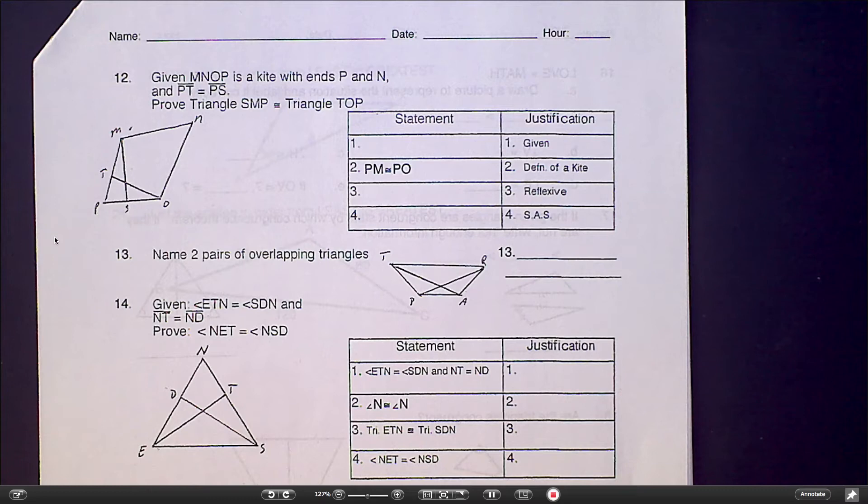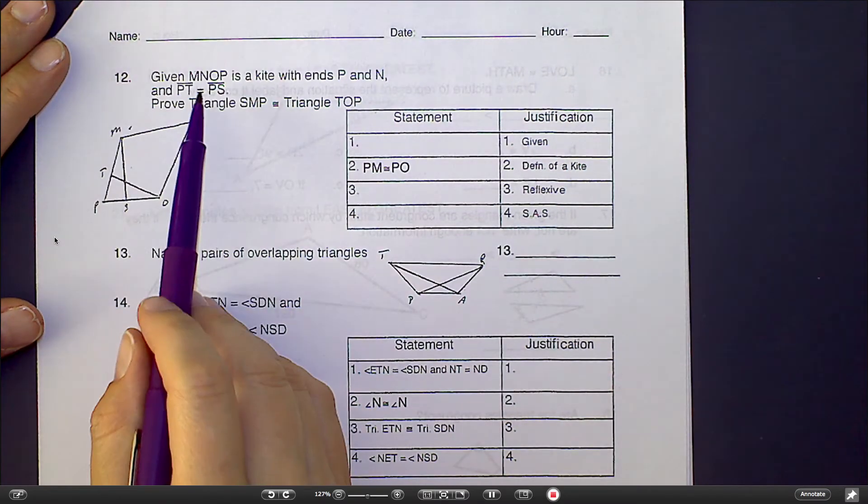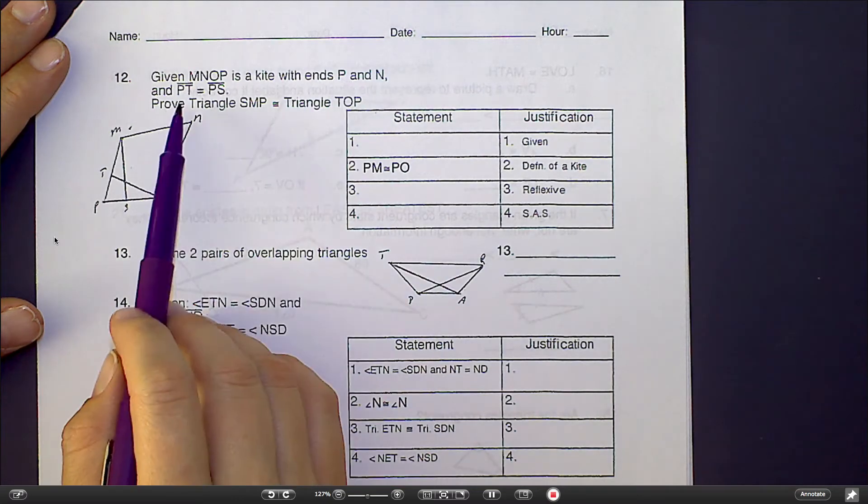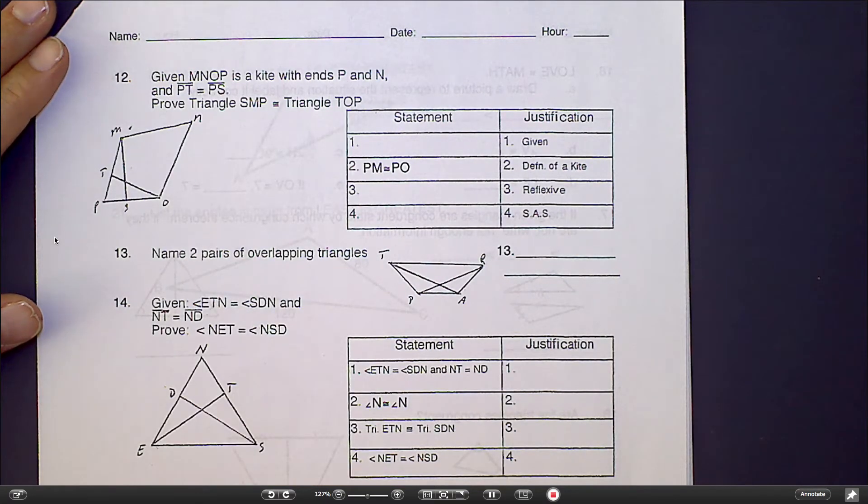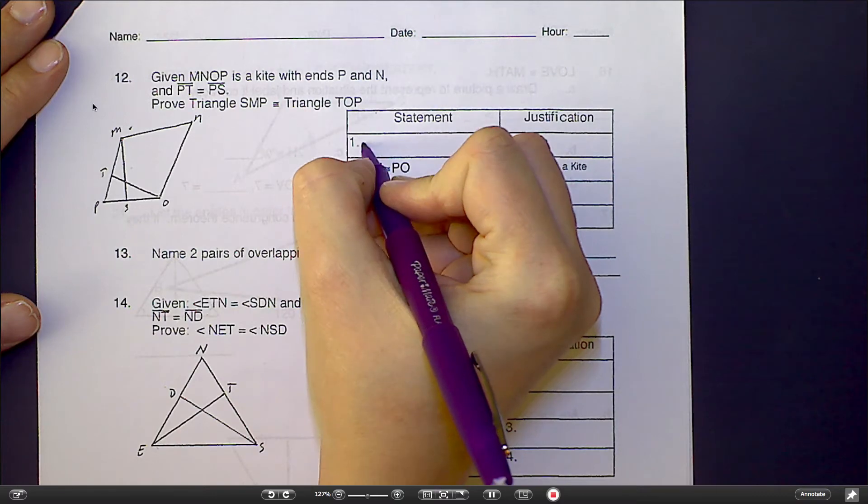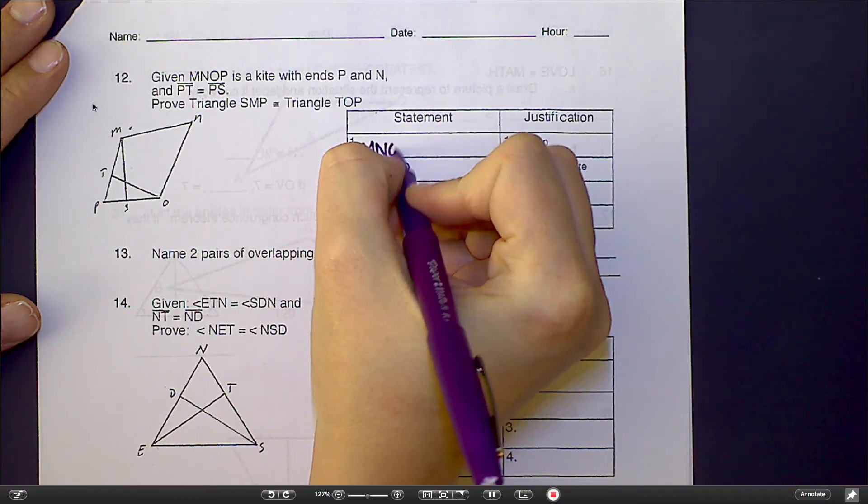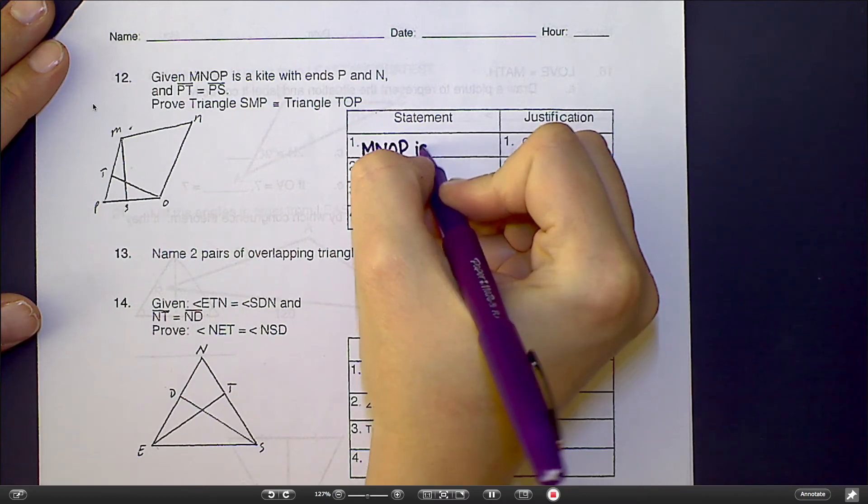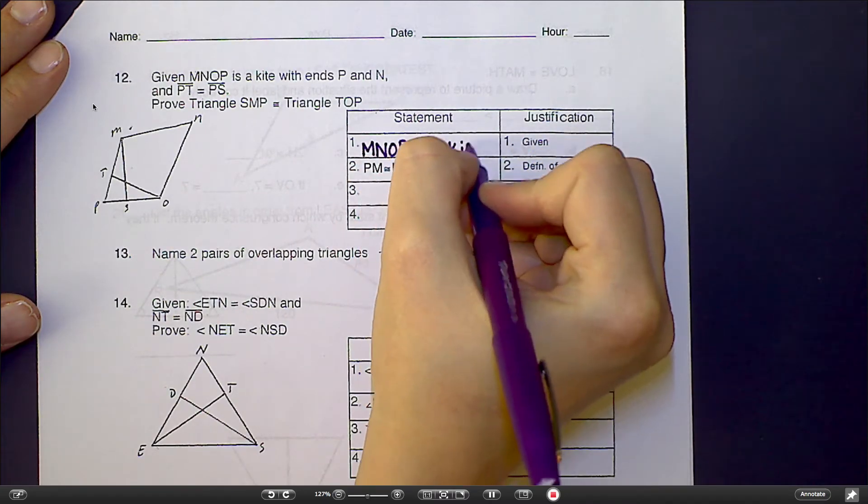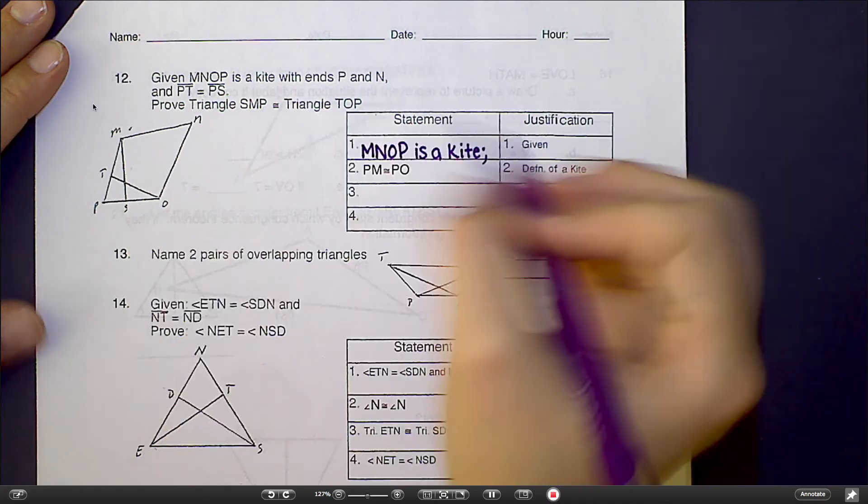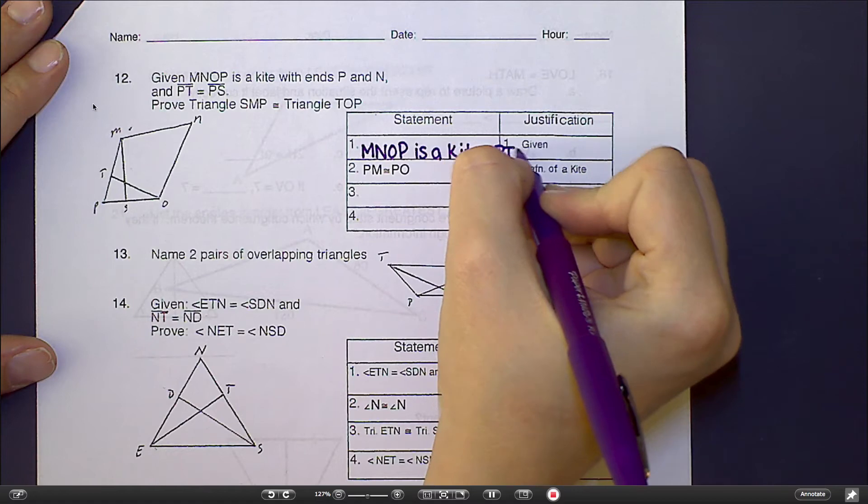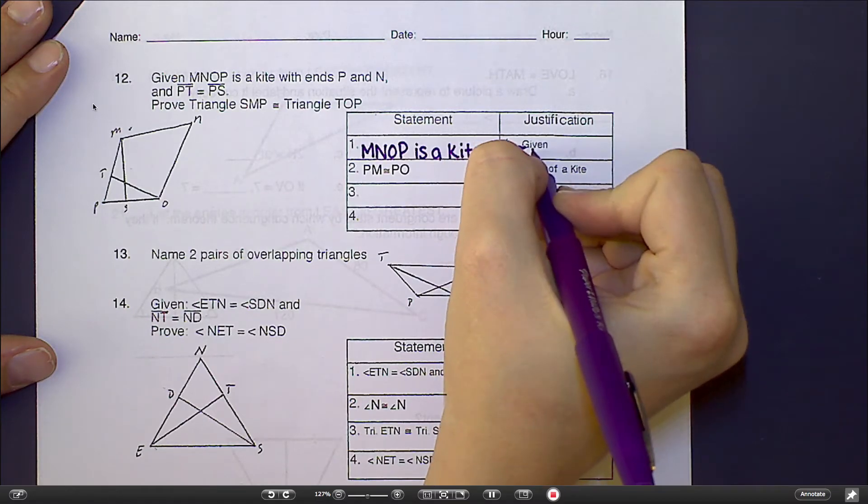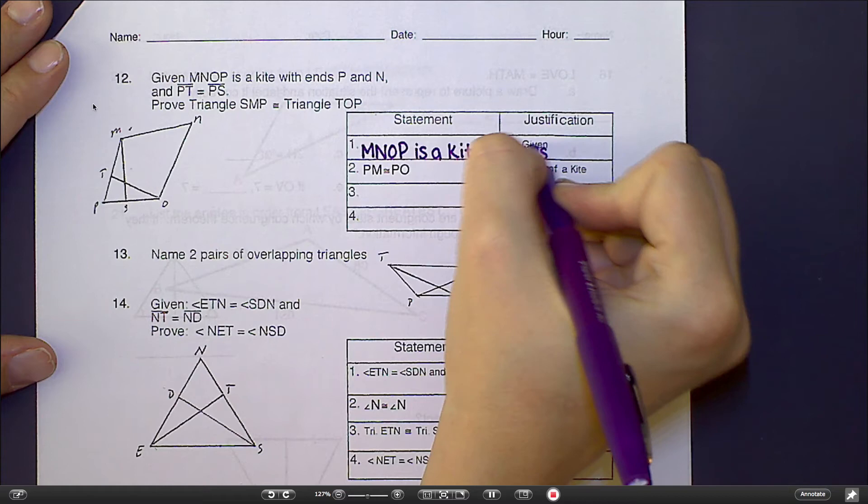Now the first step for a proof is easy. In this first one, it says given that MNOP is a kite with ends P and N, and PT is congruent to PF. The very first thing I'm going to do is just put exactly what I have down there for my given information into my proof. So I would say MNOP is a kite, and then I'll also say that PT is congruent to PS.